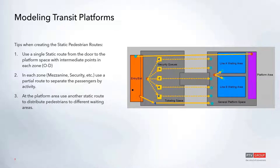Within each zone, use partial routes rather than additional static routes — the static route controls major flows and partial routes control intermediate activities at the platform area. Navigate people to the general platform space first, and if you have multiple waiting areas for different stops, use a new static route to navigate from the general platform area to the individual waiting areas. This avoids duplicating overall static routes from the entry.